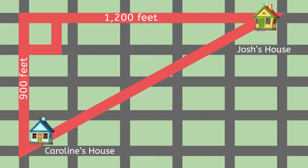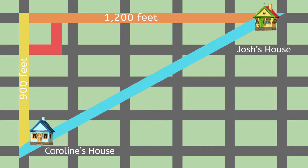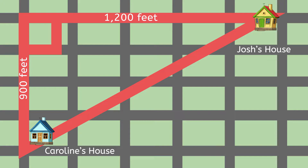Does this picture look familiar to you from the work you've been doing? A right triangle with two sides whose lengths we know and one side that we'd like to find — this is a job for the Pythagorean theorem.